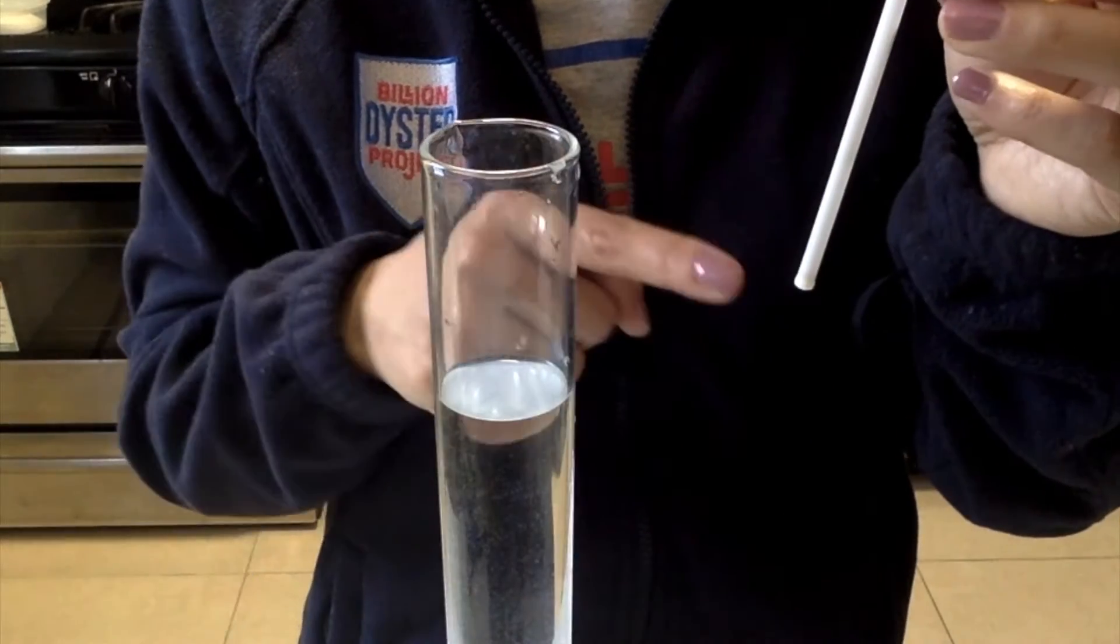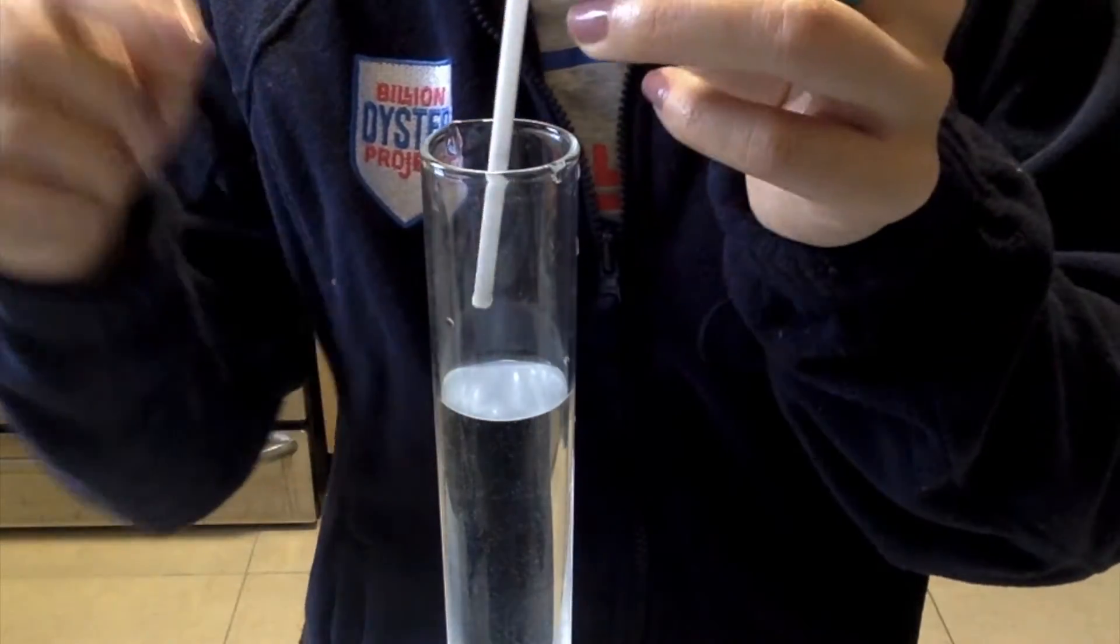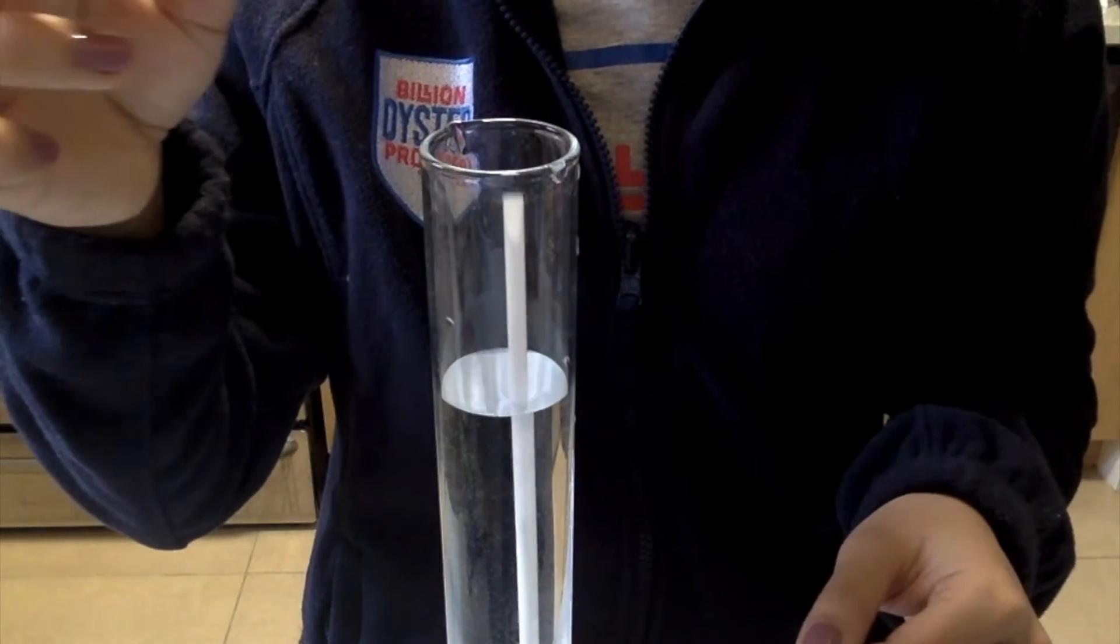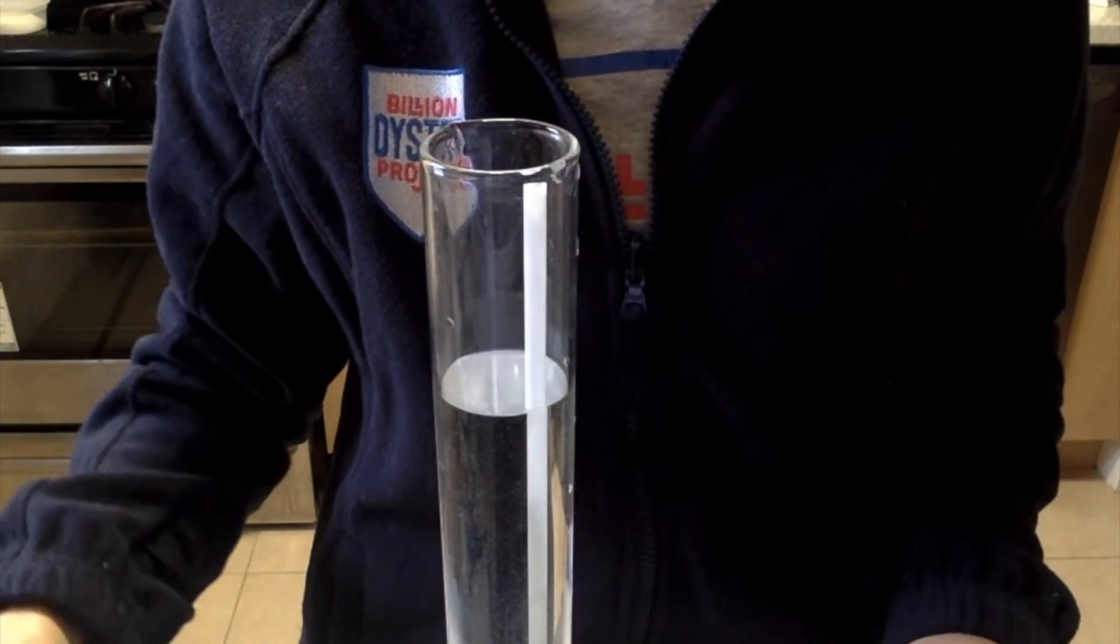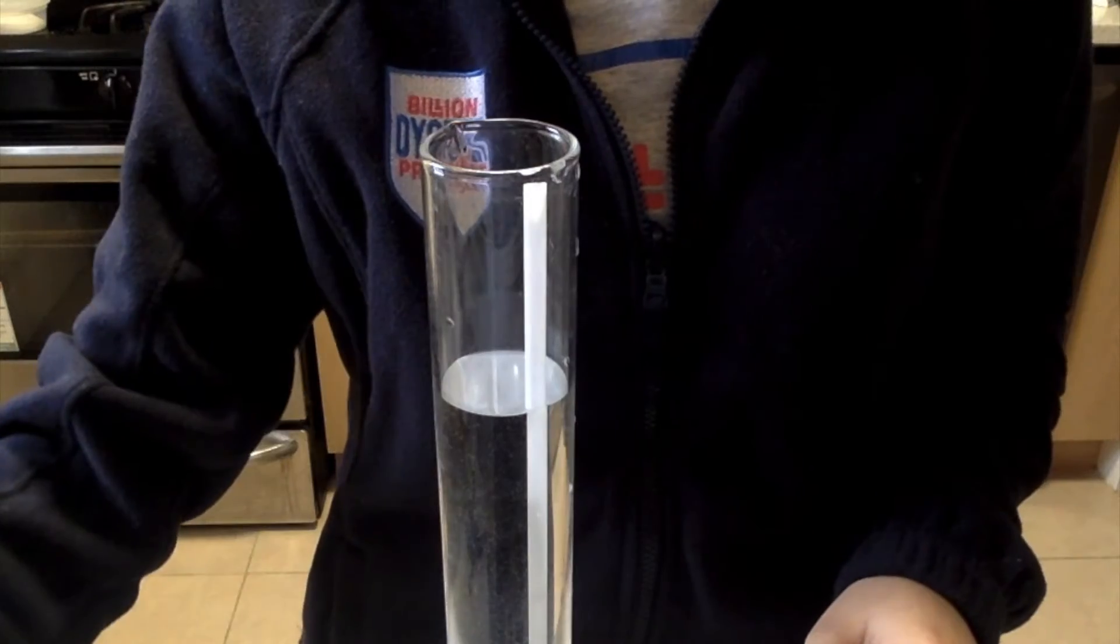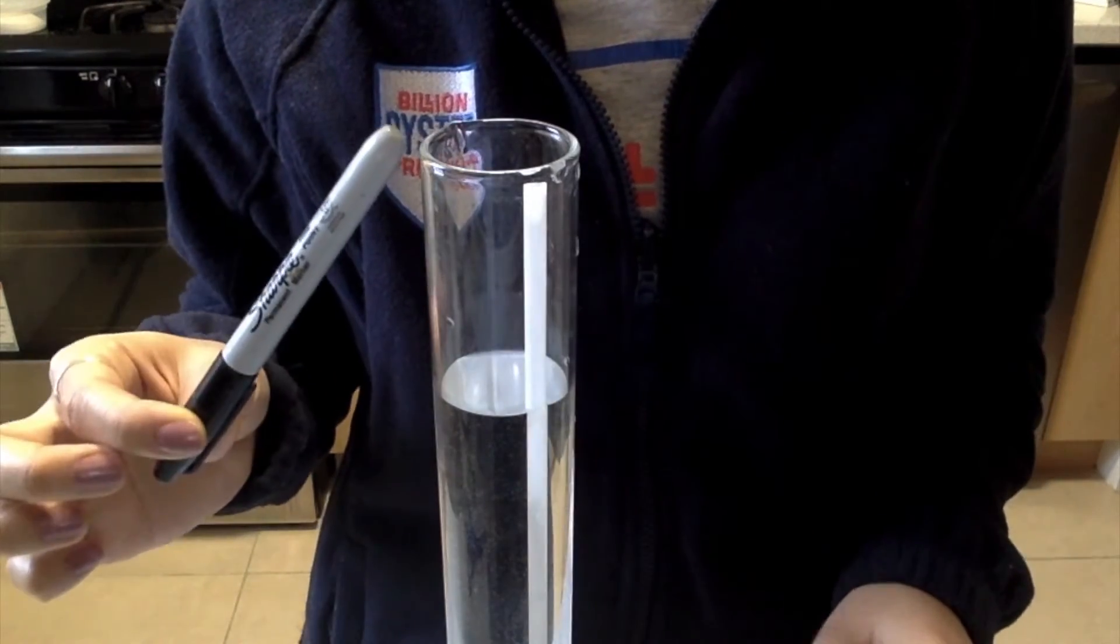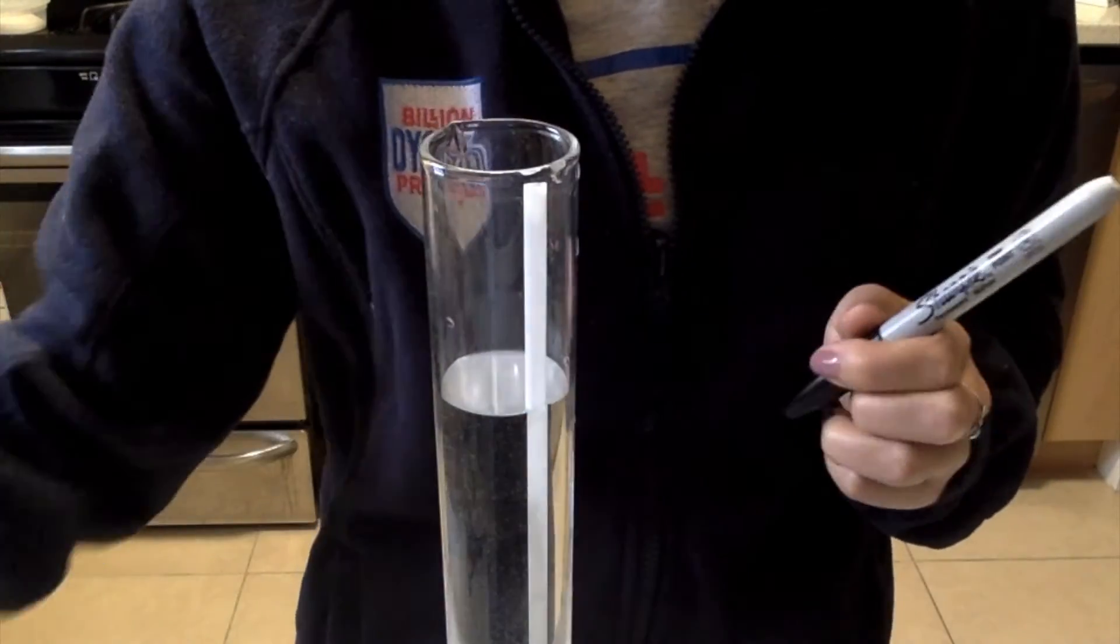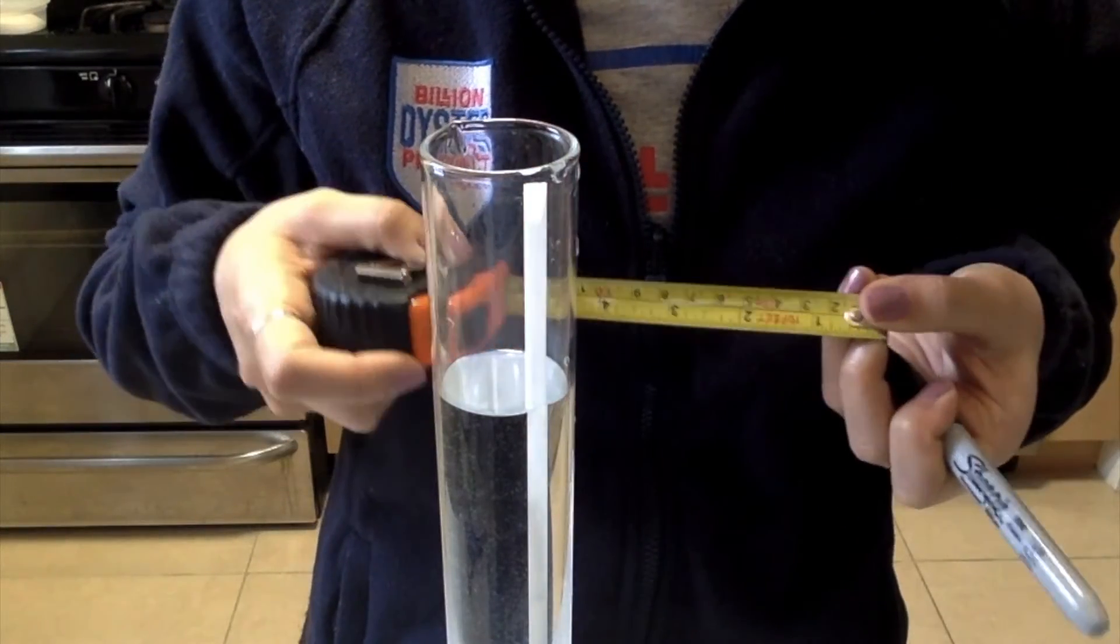When you are ready to test out your hydrometer, insert the straw gently into the water with the sealed side down. The straw should not rest at the bottom of the glass. If it does, take out one nail and see if that allows the hydrometer to float. If it doesn't, try testing the hydrometer in a taller glass.